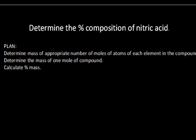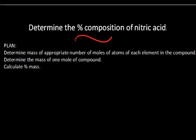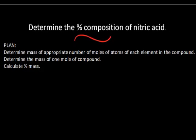We can determine the mass percent, sometimes called the percent composition by mass, of nitric acid. The plan is: first we're going to determine the mass of the appropriate number of moles of atoms in each of the elements in the compound. Then we're going to determine the mass of one mole of the compound — that's the molar mass. And then we're going to calculate the percent mass, since percent is part over whole times 100.